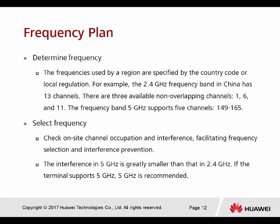Check the side channel occupation and interference to facilitate frequency selection and interference prevention. After doing a site survey, calculate which channels are used by surrounding networks, total up all SSIDs and channels, and try to use the least-used channel as your own. The interference in 5 GHz is greatly smaller than 2.4 GHz, so if the terminal supports 5 GHz, it is always the recommended option.